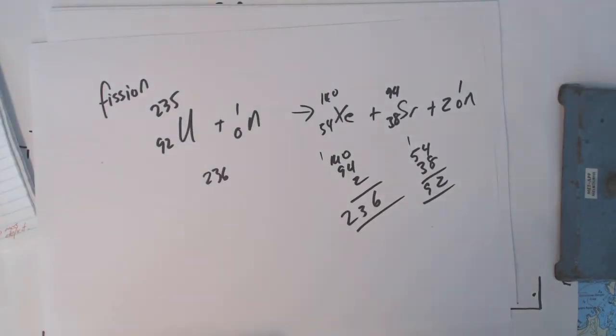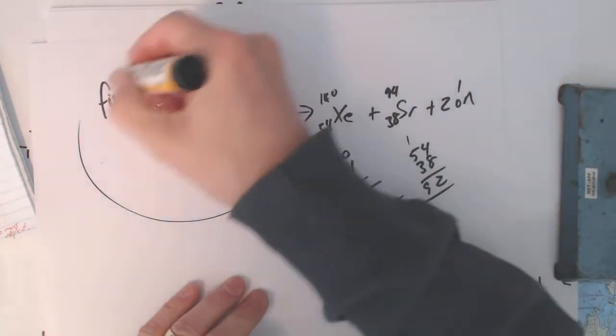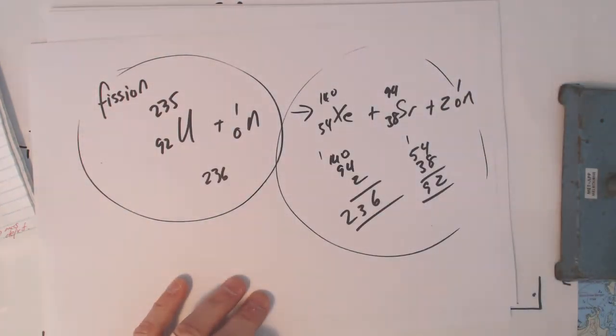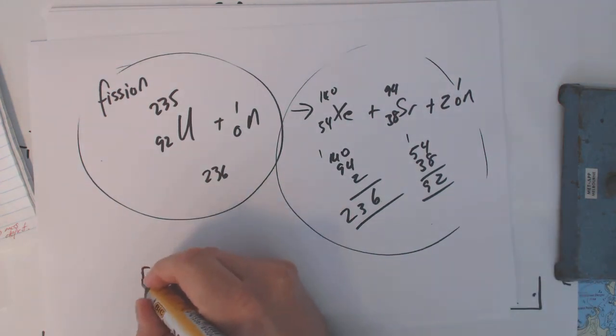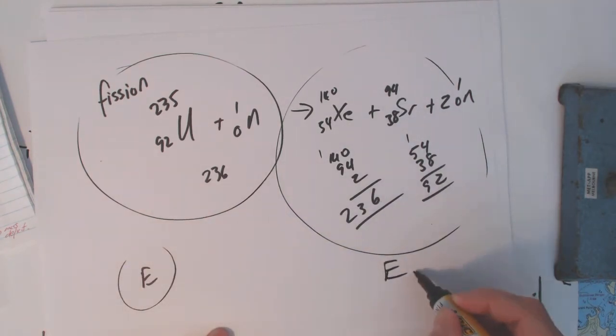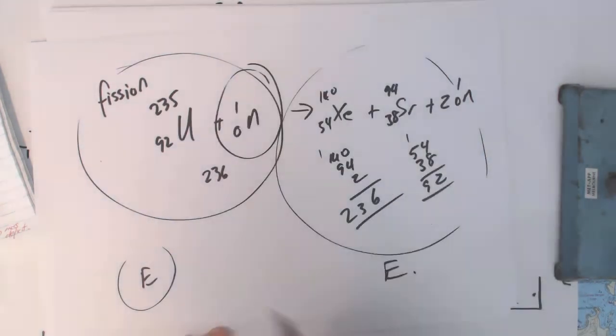How much energy is released? We can work that out by calculating our masses here and our masses here. But there's something we've got to take into account. Energy on each side must be equal. Energy on this side and energy on this side. So if this has got kinetic energy, we've got to include that in the equation. So you've got to add up the masses and the energies.